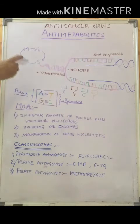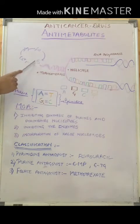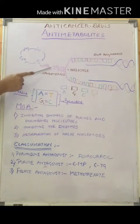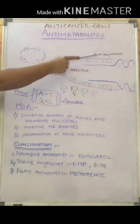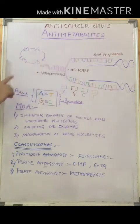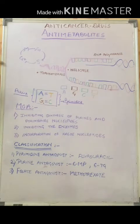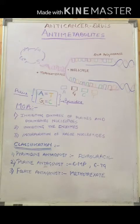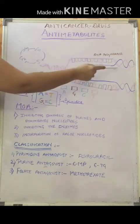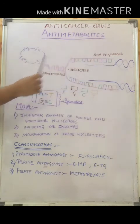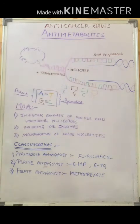Let us revise the basics. During the S-phase of the cell cycle, DNA replication occurs. Topoisomerase is the enzyme which unwinds or uncoils the DNA and exposes the bases. Helicase is an enzyme which helps to keep the two strands separate. DNA polymerase is an enzyme which helps to synthesize a new strand so that copies of DNA are made.